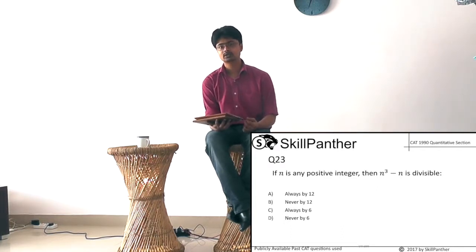So in every subsequent number of n³-n, you are guaranteed a number that is divisible by 2 and a number that is divisible by 3. So always divisible by 6, option number C is the right answer. See how quickly we can go through these now when we know what exactly we are looking for.